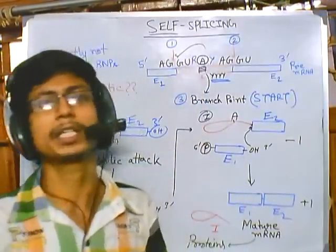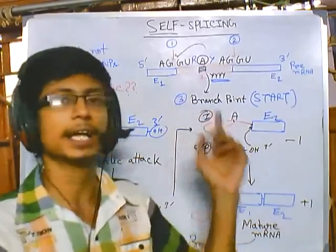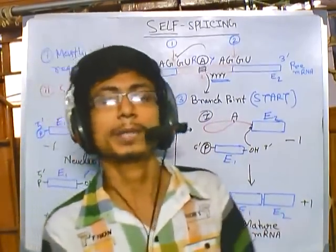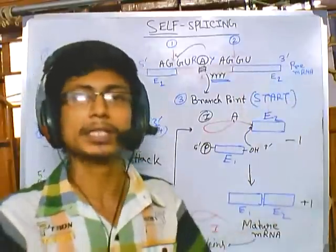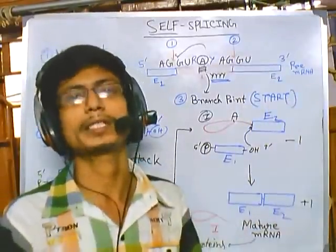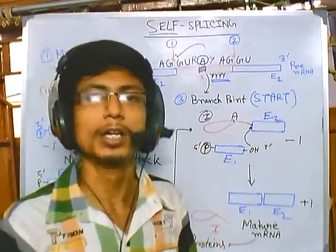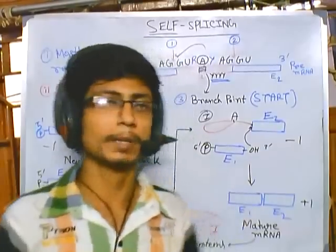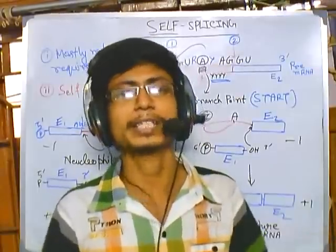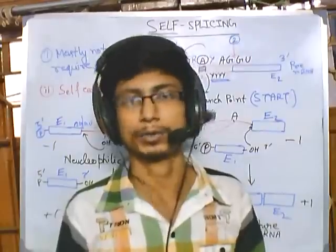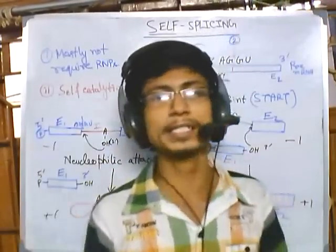The same strategy — using proteins and ribonucleoprotein complexes — is used in spliceosome-mediated RNA splicing. The pre-mRNA along with ribonucleoproteins forms a loop-like complex called the spliceosome. In the next video, we will discuss the spliceosome and how it cleaves the introns and joins the exons to produce mature mRNA. I hope this has helped you understand intron-mediated or self-splicing. Thank you.